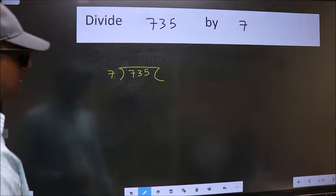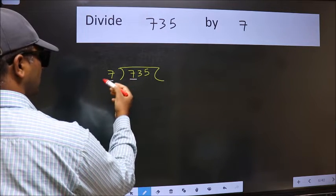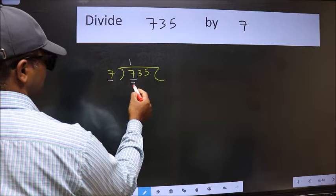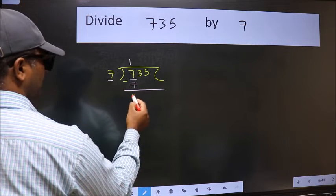Next. Here we have 7 and here 7. When do we get 7 in 7 table? 7 once 7. Now we should subtract. We get 0.